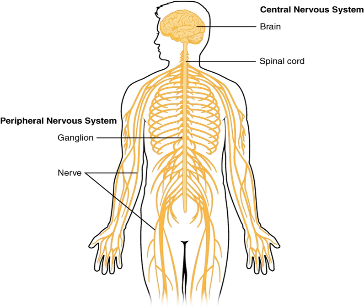Upon CNS injury, astrocytes will proliferate, causing gliosis, a form of neuronal scar tissue lacking in functional neurons. The brain — cerebrum as well as midbrain and hindbrain — consists of a cortex composed of neuron bodies constituting gray matter, while internally there is more white matter that forms tracts and commissures. Apart from cortical gray matter, there is also subcortical gray matter making up a large number of different nuclei.